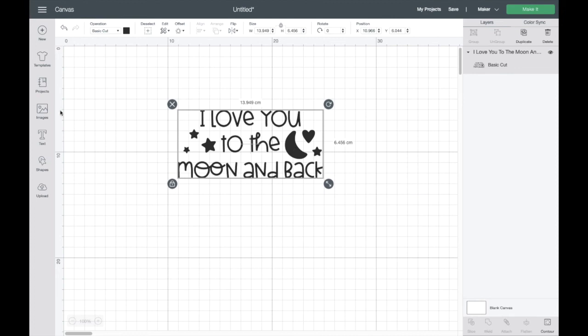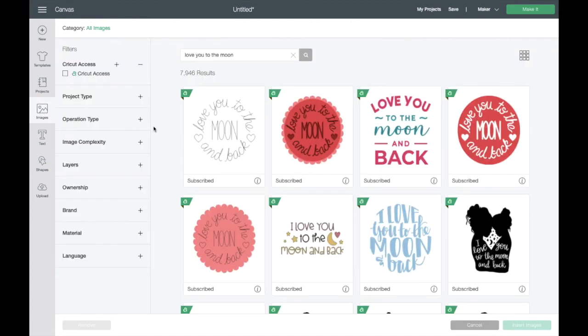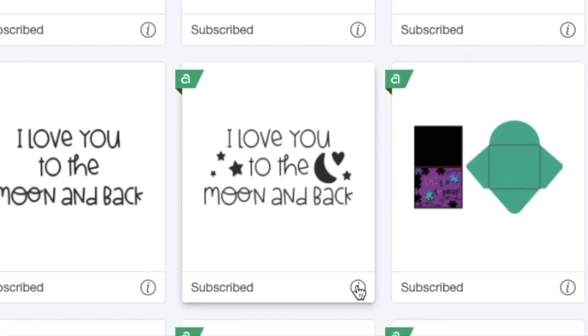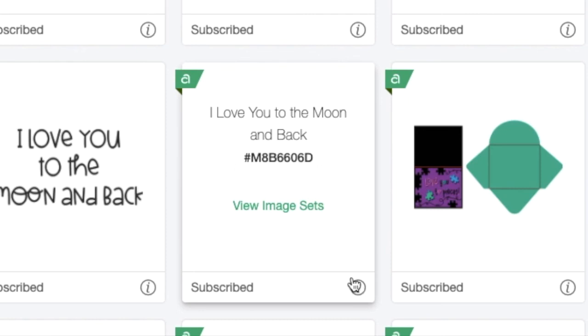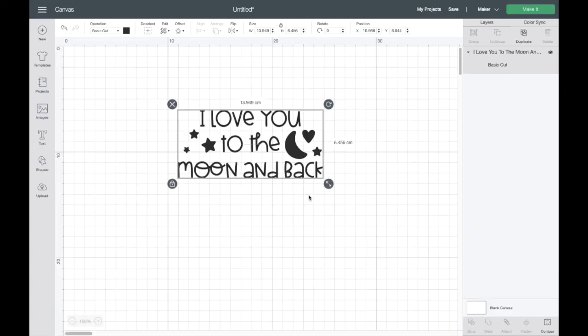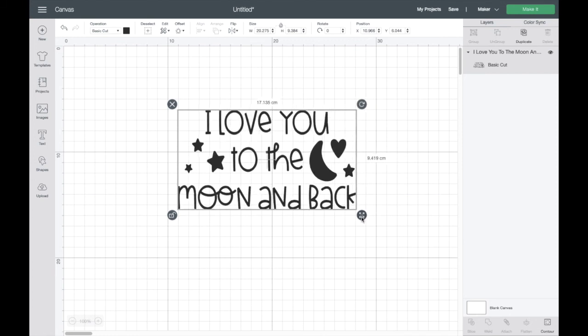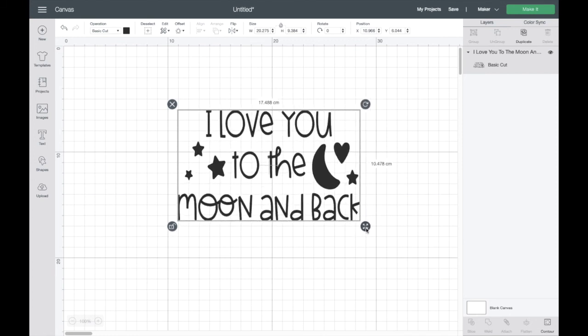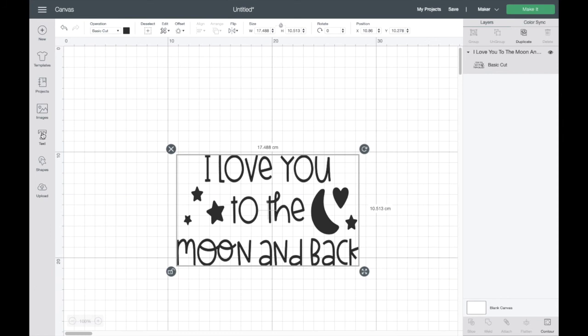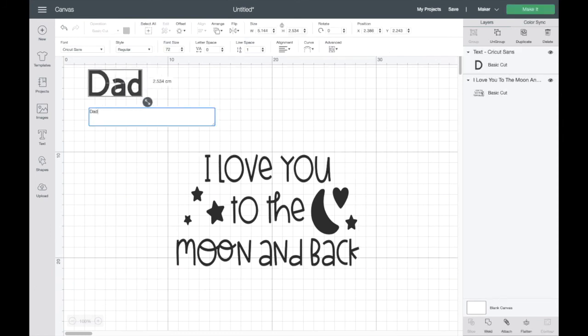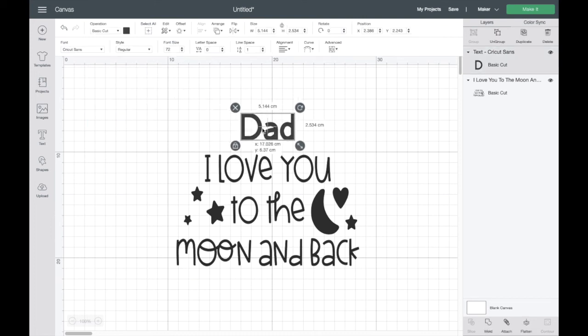This is the design that I've chosen on Cricut Design Space for my balloon. I just typed in 'love you to the moon' and all these different ones come up, and this is the particular one that I really like. If you like it you can always drop down this code and search for it. I'm going to add the word 'dad' above the 'I love you' as well so it makes it a little bit more personalized. You could also add some children's names or 'love from' or anything like that underneath if you wanted to. So I'm just going to click on text here and type in 'dad.'